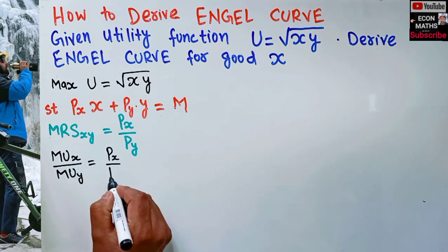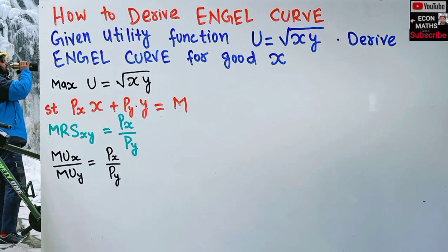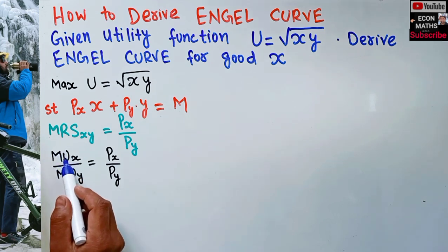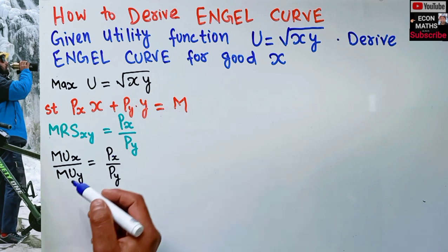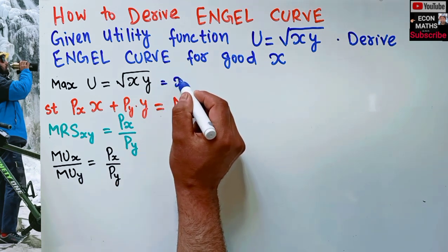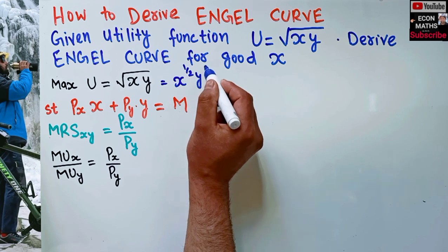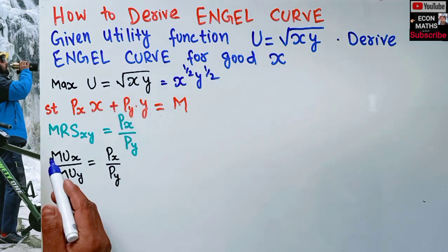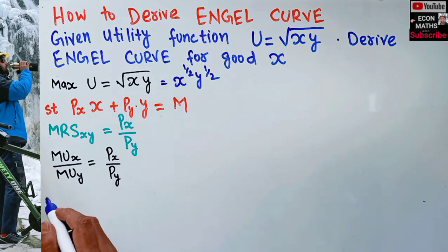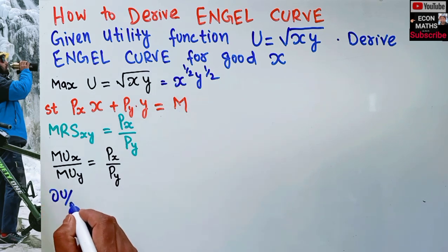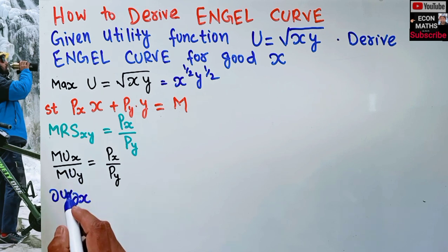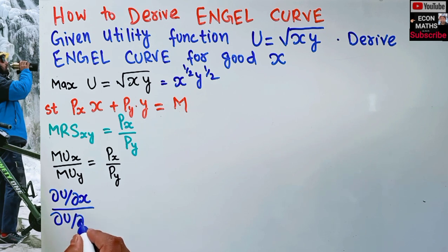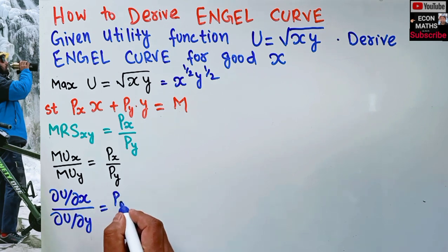MUx — marginal utility of good x — is the partial derivative of the utility function with respect to x. We can write the utility function as x^(1/2) · y^(1/2). MUx means ∂u/∂x, and marginal utility of good y means ∂u/∂y. This ratio should be equal to price of x over price of good y.